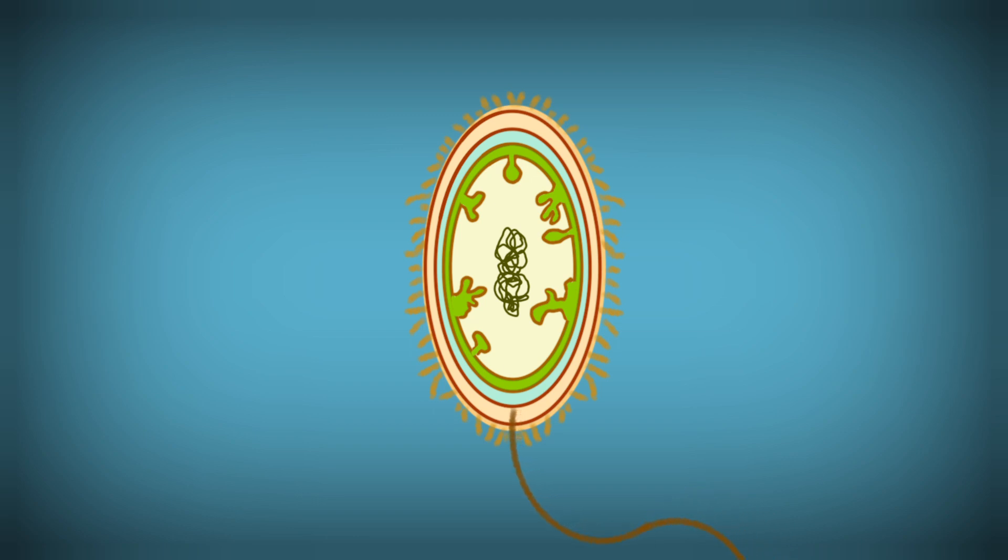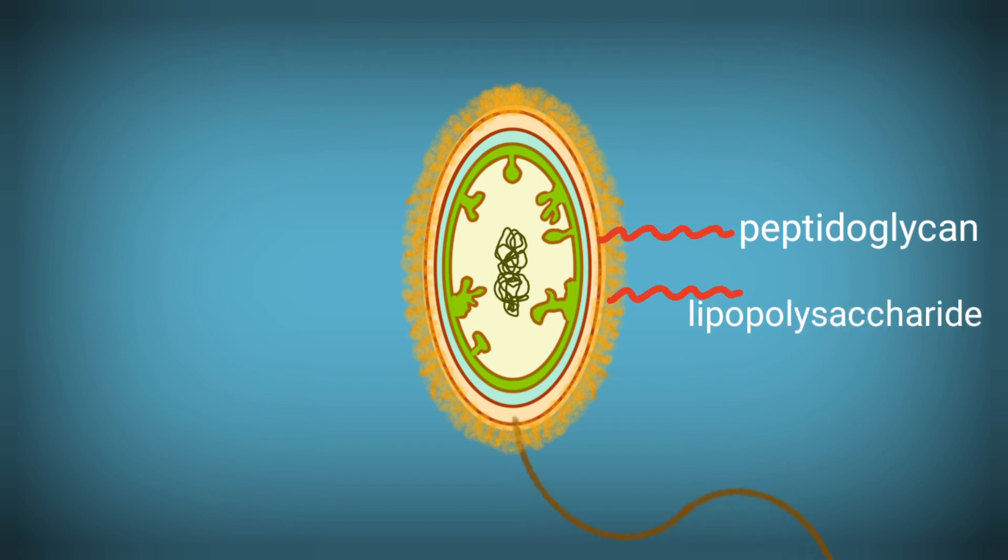While in Gram-negative bacteria, cell wall is double-layered. Inner layer is thin and composed of peptidoglycan, while outer layer is thick and made up of lipopolysaccharides.